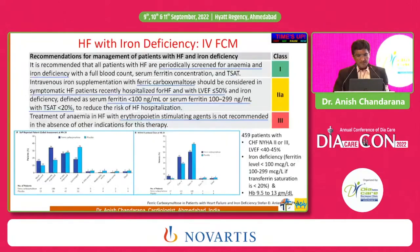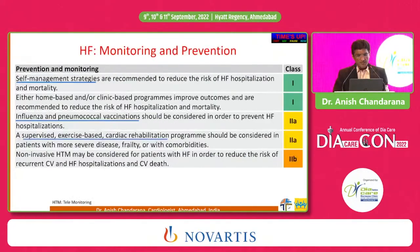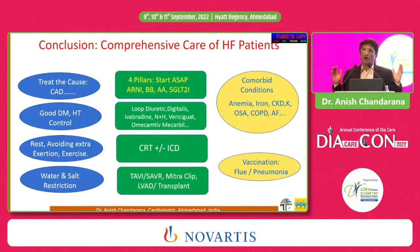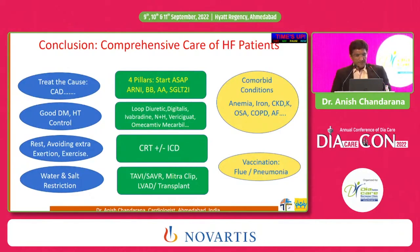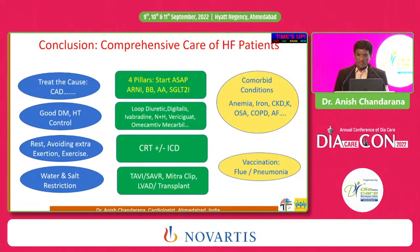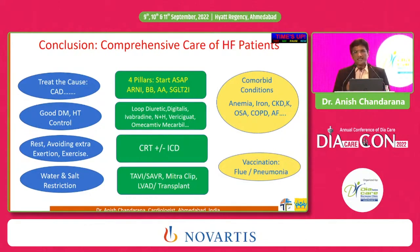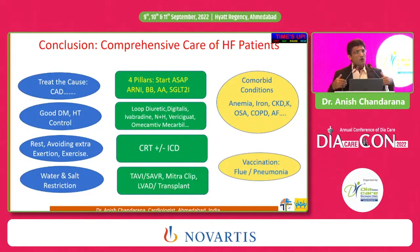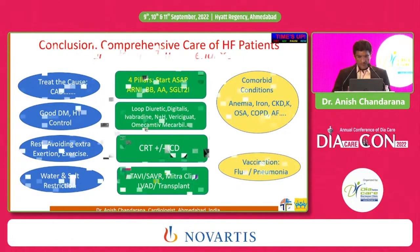In conclusion, heart failure is a complicated, devastating disease requiring a comprehensive approach. Treat the cause — whether CAD or valvular disease. Ensure good control of diabetes and blood pressure. Advise rest when needed, avoid excessive exertion, but a regular exercise training program is a must. Enforce water and salt restrictions. Treat comorbid conditions. Give vaccination for flu and pneumonia as primary prevention. The four pillars of treatment remain the most important point. In selected patients, consider devices and surgical options such as valve replacement and mechanical circulatory support. Thank you very much.